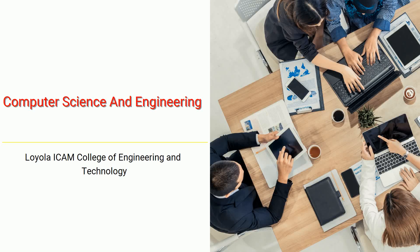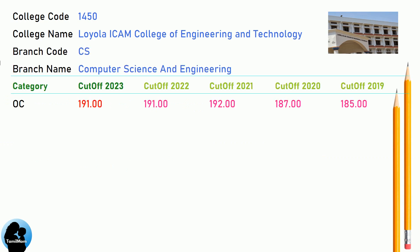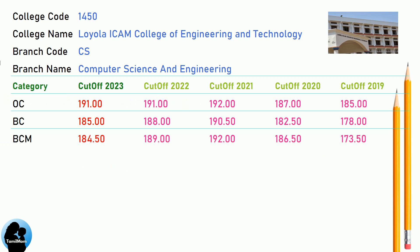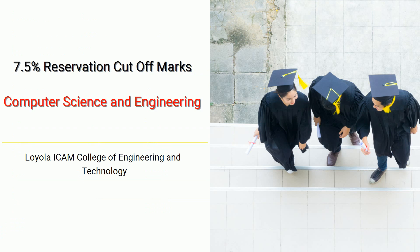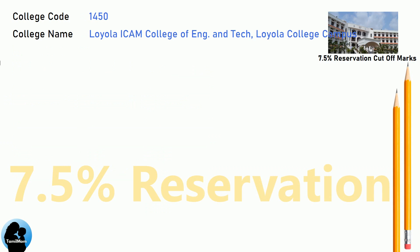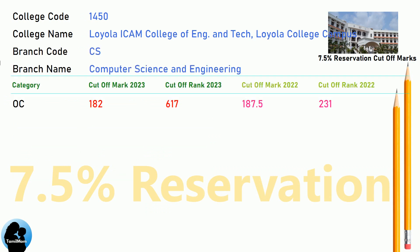DNA cutoff for Loyola ICOM College of Engineering and Technology in Computer Science and Engineering. DNA 7.5 reservation cutoff for Loyola ICOM College of Engineering and Technology in Computer Science and Engineering.